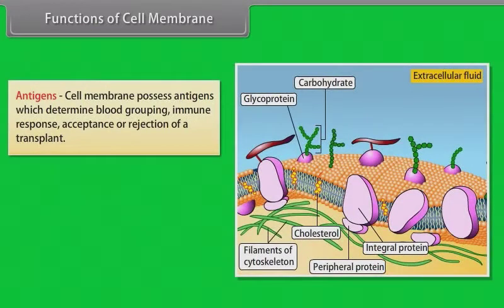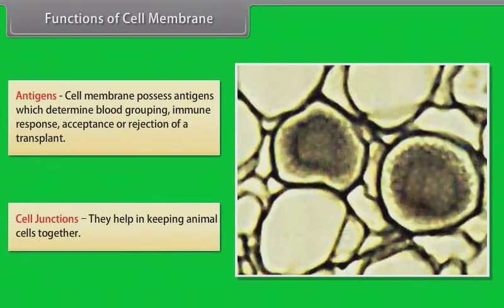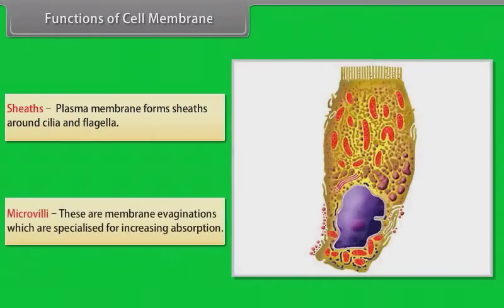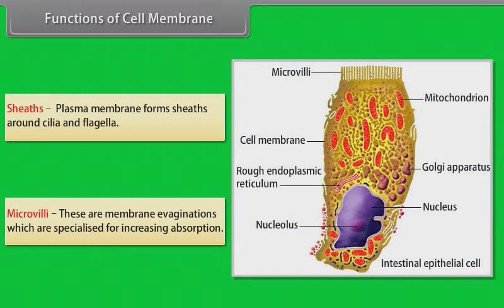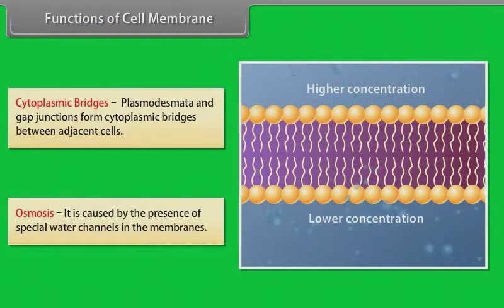Antigens: the cell membrane possesses antigens which determine blood grouping, immune response, and acceptance or rejection of a transplant. Cell junctions: they help in keeping animal cells together. Sheets: plasma membrane forms sheets around cilia and flagella. Microvilli: these are membrane evaginations which are specialized for increasing absorption. Cytoplasmic bridges: plasmodesmata and gap junctions form cytoplasmic bridges between adjacent cells. Osmosis: it is caused by the presence of special water channels in the membranes.